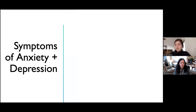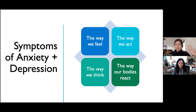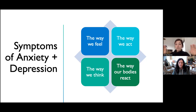Now we're going to touch briefly on symptoms of anxiety and depression. A lot of times when we think of symptoms, our first thoughts go to ones related to our mood — things like feeling sad or hopeless. These are absolutely symptoms, but it's a little more complex than that. We have four categories where we recognize symptoms of anxiety and depression: the way we feel, the way we act, the way we think, and the way our bodies react. I'll go through and give a few examples of each for depression and anxiety.